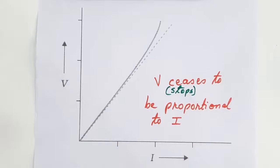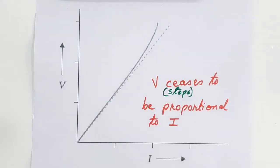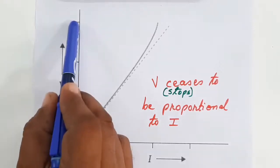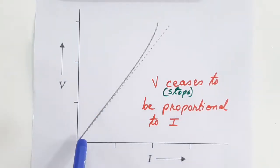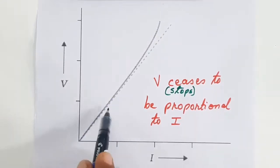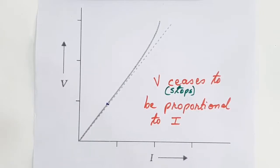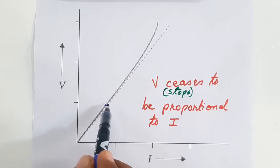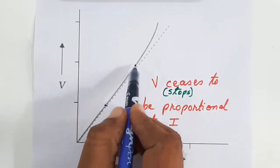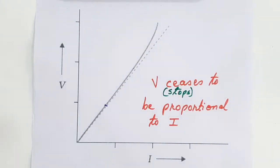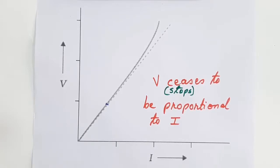The dotted line denotes a linear relation — the ohmic conductor — while the bold curve represents a conductor which is not ohmic. As V increases on the Y axis and I on the X axis, V and I are initially almost linear up to a certain point, but as V keeps increasing the graph stops being linear and starts becoming a curve. This is one example where Ohm's law is not followed — V stops being proportional to I.